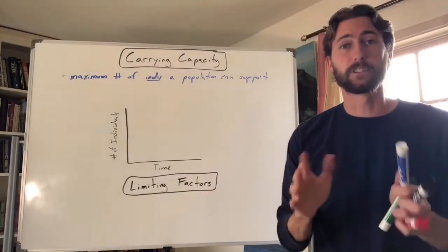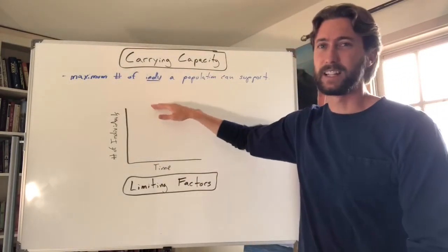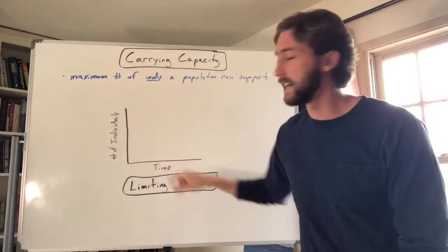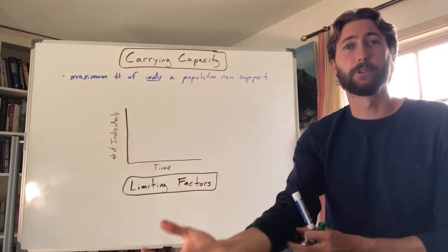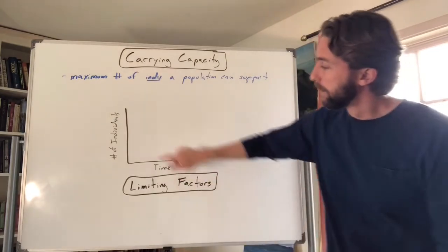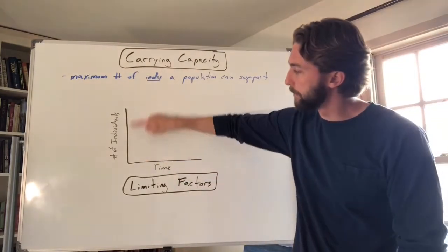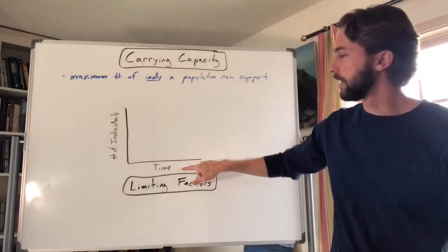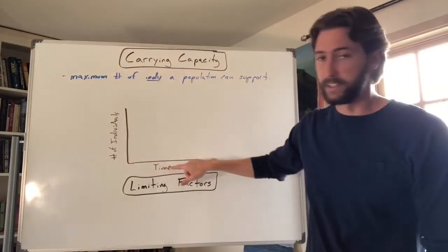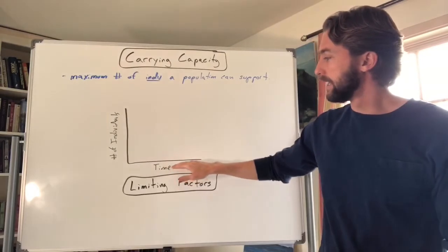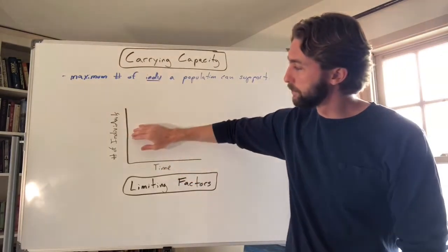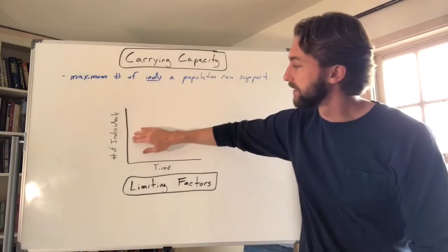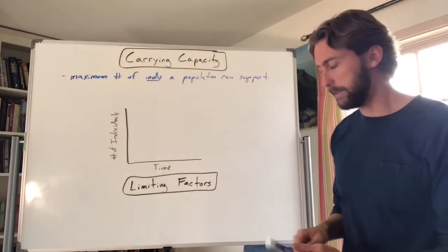Let's graph it to make it visual. When you look at a graph, look for a title and check the axes. On our y-axis we have number of individuals; on the x-axis we have time. So we're graphing the number of individuals over time. Time is our independent variable, and number of individuals is our dependent variable.